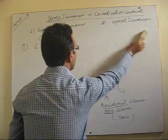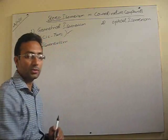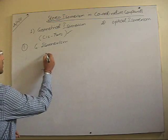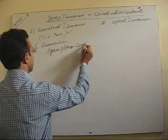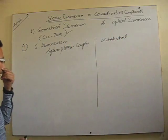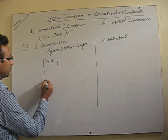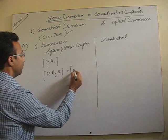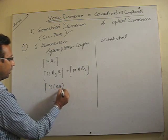There are certain square planar as well as octahedral complexes where geometrical isomerism is not possible. For example, among square planar and octahedral complexes, the cases like MA4, MA3B, and MAA2 (where AA is a bidentate ligand with two same donor atoms) do not show geometrical isomerism.